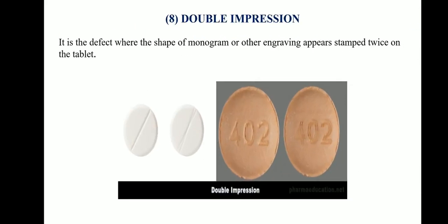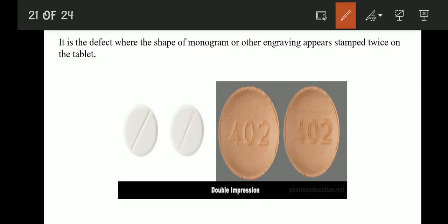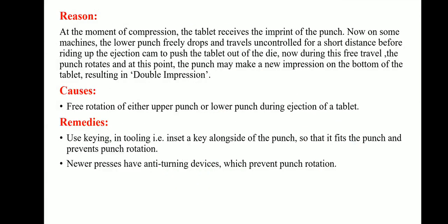The machine-related defect is double impression, where the shape of monograms or engravings appears stamped twice on the tablet. This occurs because at the moment of compression the tablet receives the punch imprint, and on some machines the lower punch freely drops and travels uncontrolled before riding up the ejection cam. During this free travel the punch rotates, making a new impression on the bottom of the tablet. The remedy is to use keying in the tooling — a key alongside the punch prevents rotation — and newer presses have anti-turning devices.